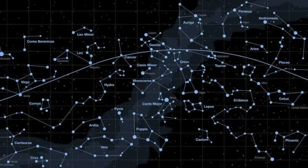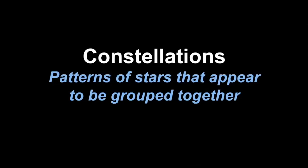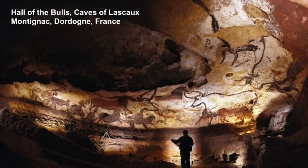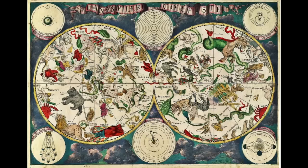When looking at a star map, the first thing you probably recognize are a series of dots with lines connecting them, and these make shapes and patterns with different names. These are all constellations — patterns of stars that appear to be grouped together, and they really are a human invention.